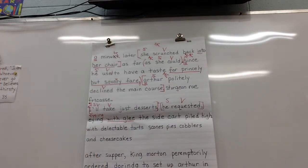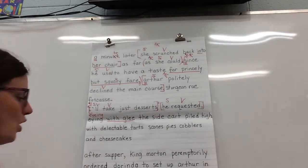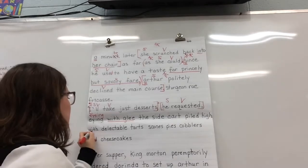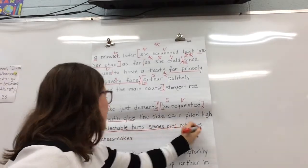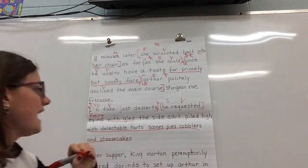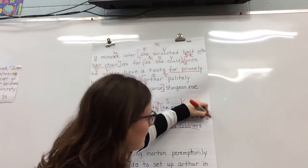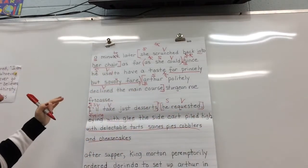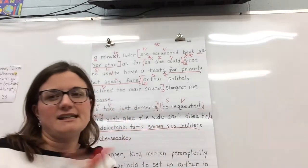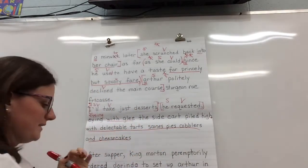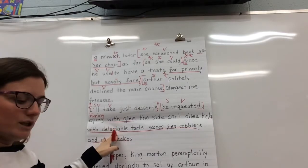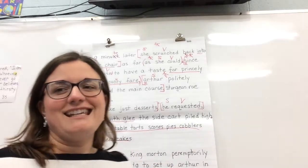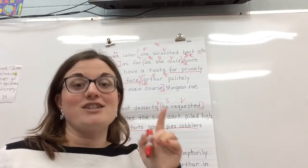The side cart piled high with delectable tarts, scones, pies, cobblers and cheesecakes. And we're going to get rid of the comma after high. You can barely see mine. So don't forget to mark it over there. Because prepositional phrases that are in the middle of a sentence, we don't put a comma before them. Delectable is our bolded word. Did you look that up in the dictionary? It means delicious.